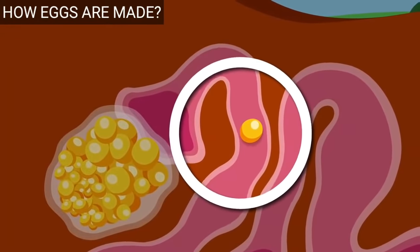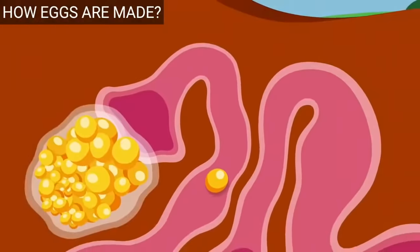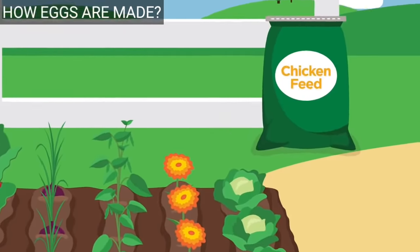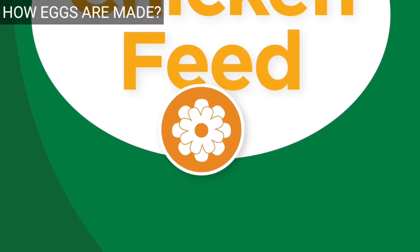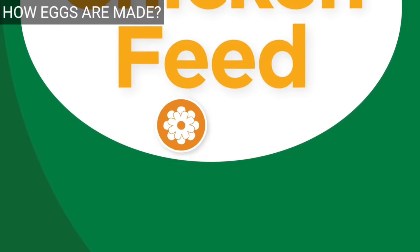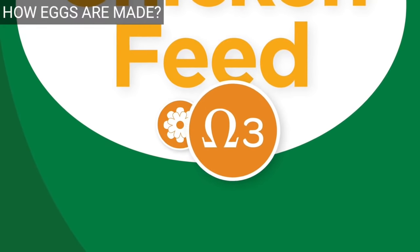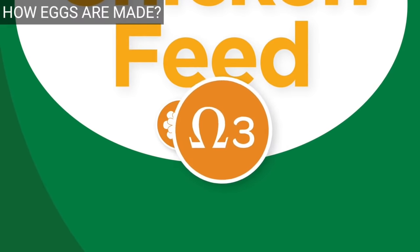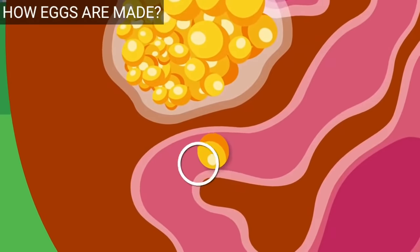Raising hens on leafy greens and feeding them feed with marigold meal will give yolks a beautiful dark orange color. Feeds fortified with omega-3 fatty acids will make the yolks even healthier as the yolk travels down the oviduct.